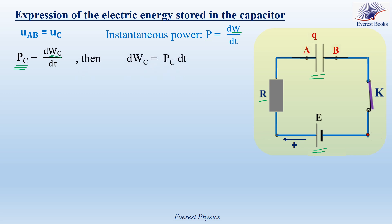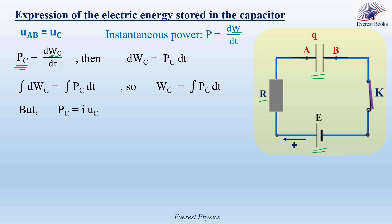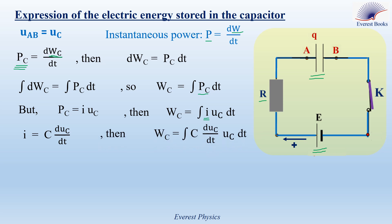Rearranging, dWc = Pc·dt. Taking the antiderivative of both sides gives Wc = ∫Pc·dt. Generally, the instantaneous electrical power equals the current multiplied by the voltage, so Pc = i·Uab = i·Uc. Replacing Pc by i·Uc gives Wc = ∫i·Uc·dt. Looking at the circuit, the positive sense enters the capacitor through the plate of charge Q, so i = +dQ/dt = C·dUc/dt. Substituting i by C·dUc/dt gives Wc = ∫(C·dUc/dt)·Uc·dt. The dt terms cancel, leaving Wc = ∫C·Uc·dUc.